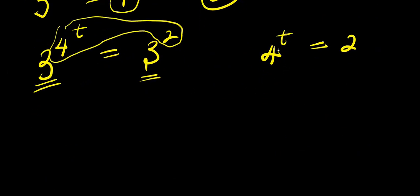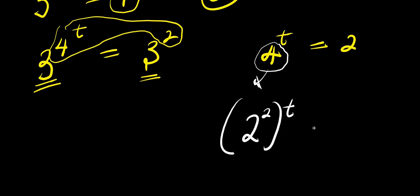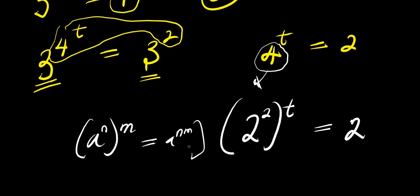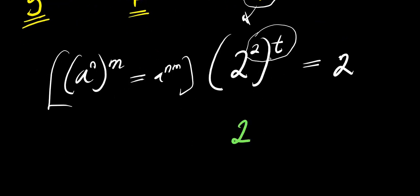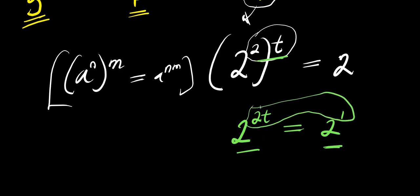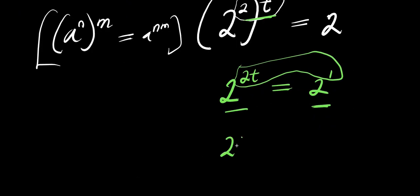The next step is to solve for t. Since 4 is a perfect square, we express it as 2 to the power of 2. Applying the identity (a to the power of n) to the power of n equals a to the power of n times n, we multiply the exponents. We get 2 to the power of 2t, and this equals 2 to the power of 1. At this point we compare exponents again since the bases are the same, giving us 2 times t equals 1.